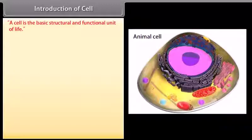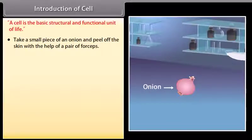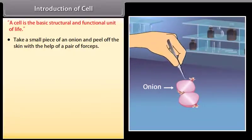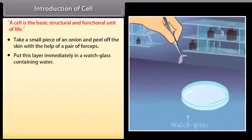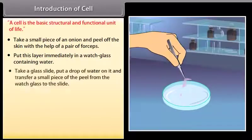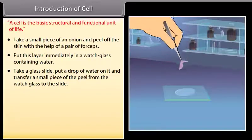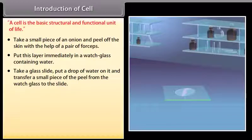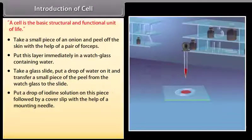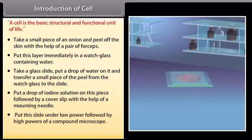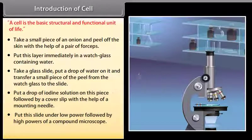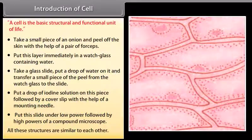A cell is the basic structural and functional unit of life. Experiment: Take a small piece of an onion and peel off the skin with the help of a pair of forceps. Put this layer in a watch glass containing water. Take a glass slide, put a drop of water on it, and transfer a small piece of the peel onto the slide. Put a drop of iodine solution on this piece followed by a cover slip. Put this slide under low power followed by high power of a compound microscope. All these structures are similar to each other.